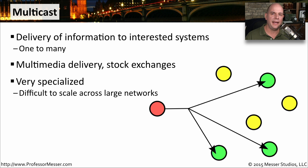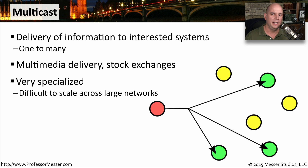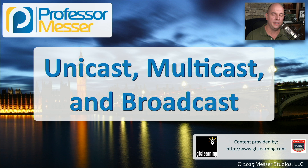Unfortunately, multicast is a very specialized function. You have to have applications that understand how to take advantage of multicast, and you have to have infrastructure equipment along the way in the network that knows how to react when multicast information is sent. Because of that, we still see unicast used for things like streaming media that might otherwise take advantage of multicast. Multicast is usually found in specific niche environments, and is typically locally administered and configured by the network administrator.